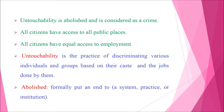Untouchability is abolished and is considered a crime. Untouchability is the practice of discriminating various individuals and groups based on their caste and the jobs done by them. Untouchability is abolished — abolished means put an end to a practice. All citizens have access to all public places like roads, parks, theatres, amusement parks, hospitals, schools, pilgrim centres, railway stations, and rail and bus services. All citizens have equal access to employment.